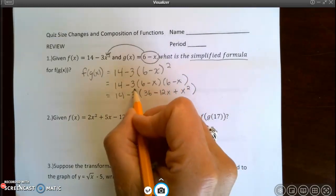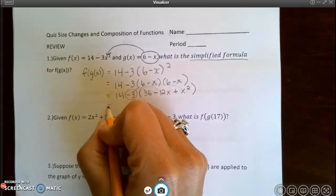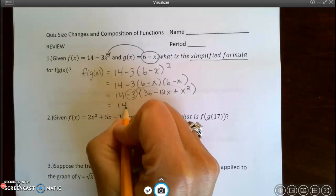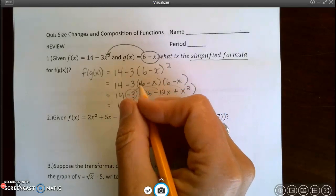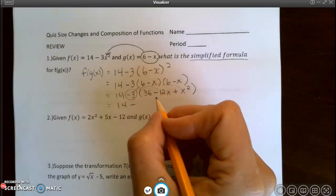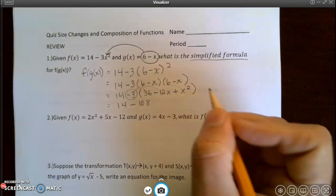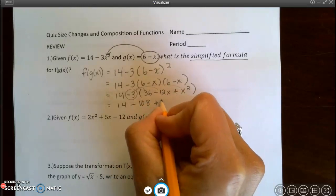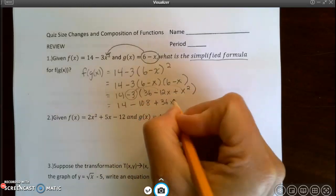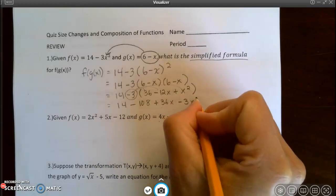Now that I have taken care of my exponent, I need to take care of this multiplication and distribute. Notice it's not just a 3, it's a negative 3. So 14 minus 3 times 36 is 108, so negative 108. And then negative 3 times negative 12 is plus 36x, and then minus 3x squared.